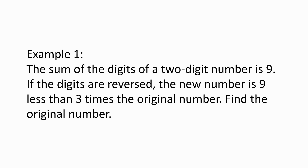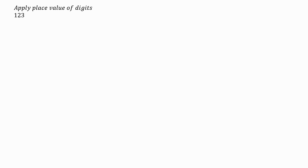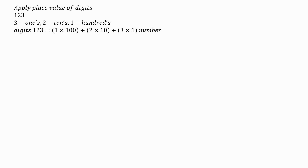To solve this problem we need to apply the place value of digits. For example, consider the digits 1, 2, and 3 in that order. Digit 3 has the place value of ones, 2 has the place value of tens, and 1 has the place value of hundreds. To convert the digits 1, 2, 3 into a number, we multiply each digit by its respective place value.